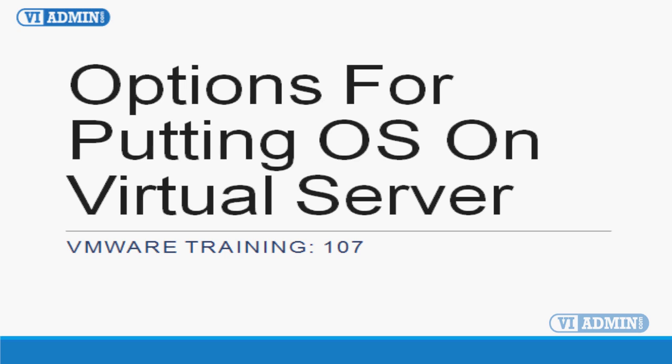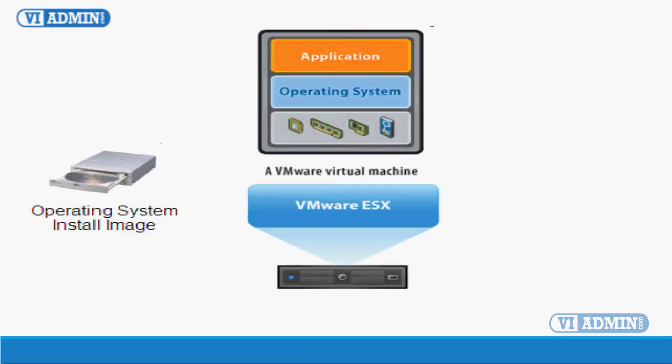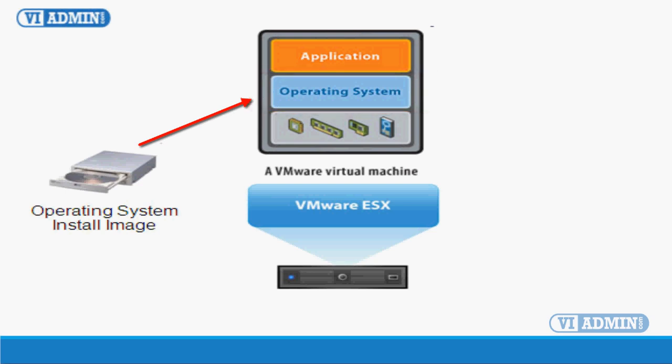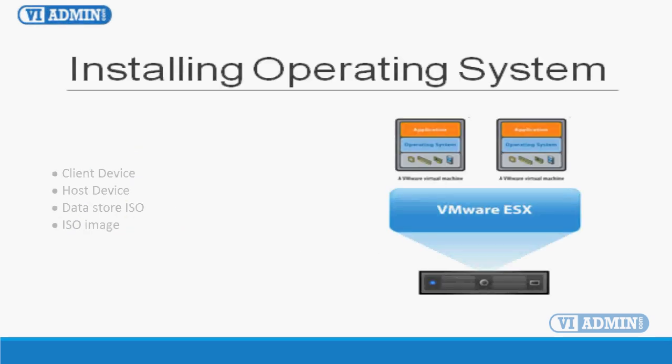Now that our virtual machine configuration is complete, it's time to turn it on and install the operating system. Each virtual machine needs its own unique OS installation, but once you have it set up you can create multiple copies of it. The new virtual machine is like a physical computer with a blank hard disk — you must partition and format the virtual disk and install an operating system. The OS installation program might handle the partitioning and formatting steps for you. Installing a guest OS inside your virtual machine is essentially the same as installing it on a physical computer.